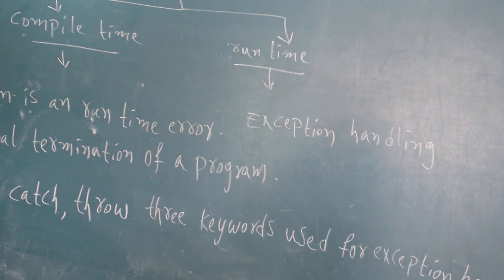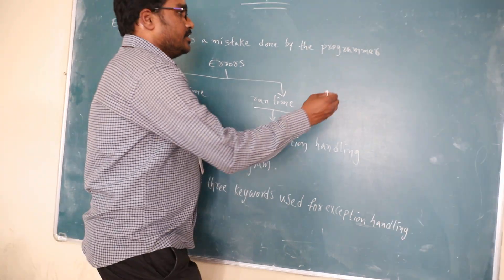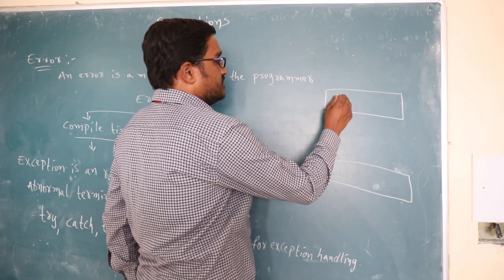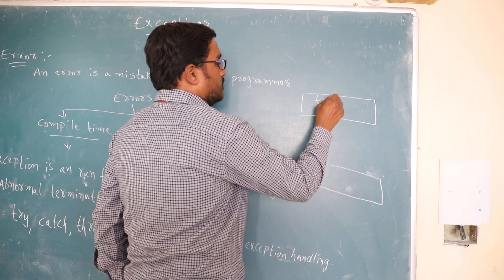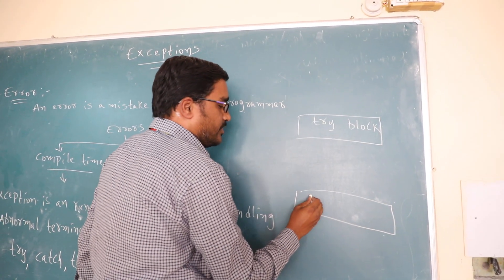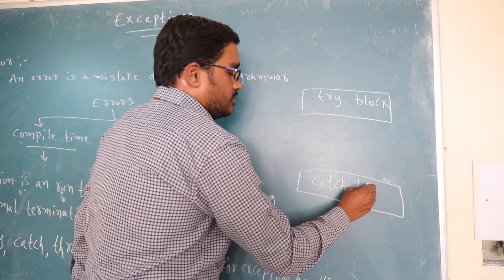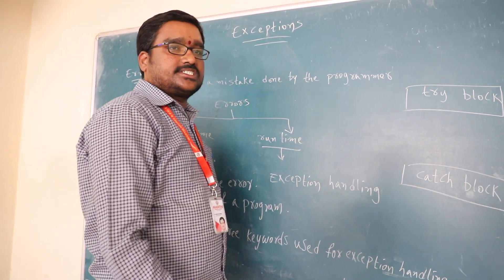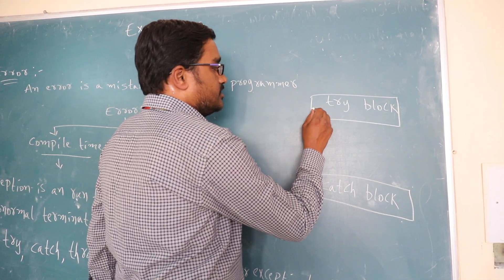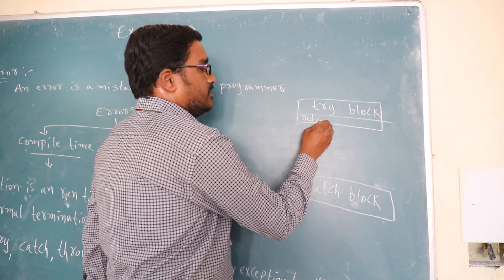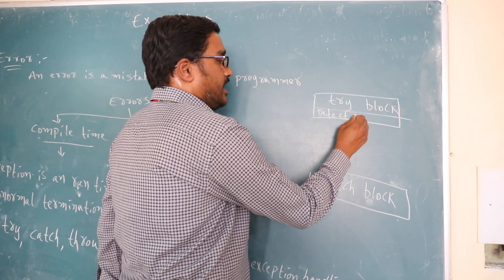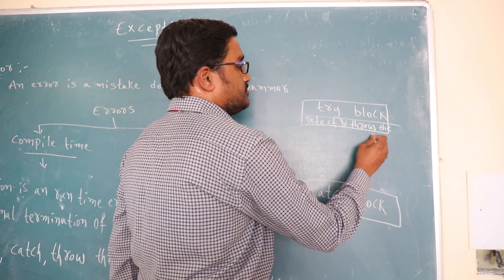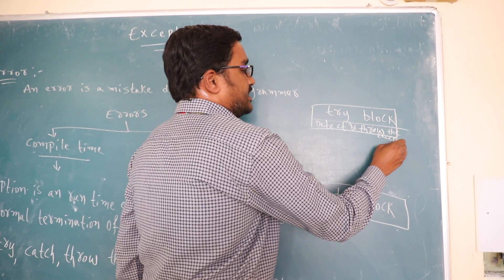Here, exception handling mechanism can be done using two blocks. One is try block and the other one is catch block. And what is the duty of this try block is? The try block's duty is to detect and throw the exception. Detect and throw the exception.